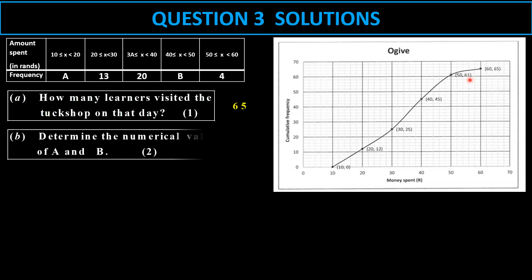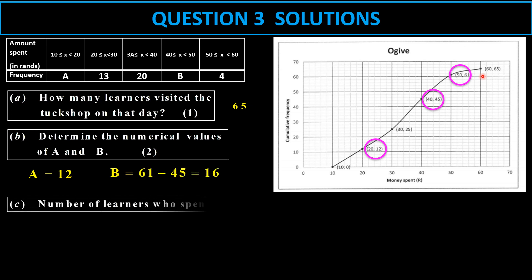Then determine the numerical values of A and B. And you see the A goes with the interval 20, 10 to 20. There's 10 to 20. So I take the reading there, 20, 20 goes with 12. Therefore, A must be 12. The frequency is 12. Then I want B, that is from 40 to 50. So I need to take that reading. So I take that reading at 61. And because it's cumulative, I need to subtract. So that's going to be 61 minus 45. And that gives you 16.